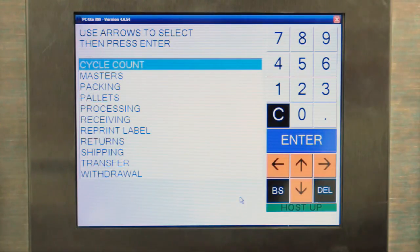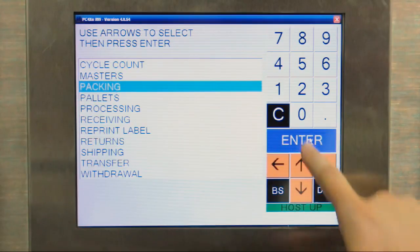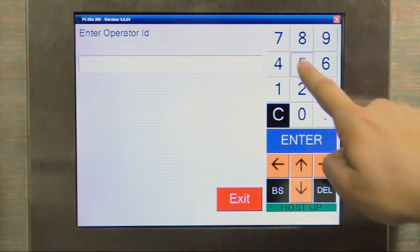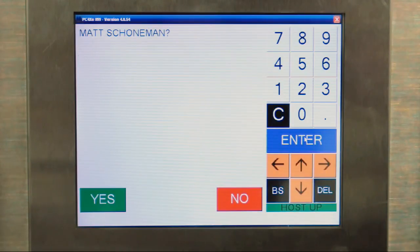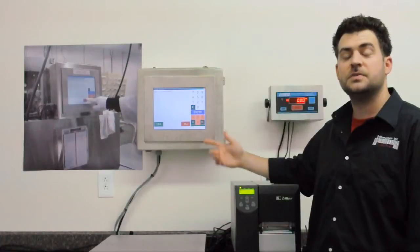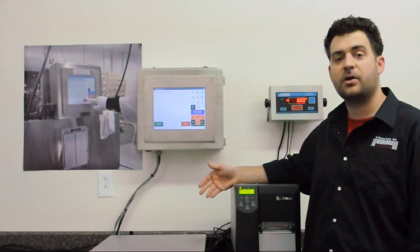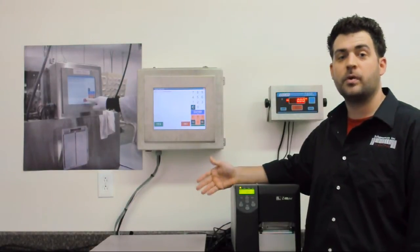So to start the packing transaction, I just select packing from the menu, press enter. Vistatrack asks for my operator ID. Mine is 5. My name comes up. Vistatrack utilizes employee ID numbers so supervisors can monitor employee productivity through reports in the office.